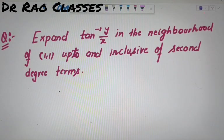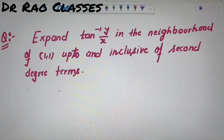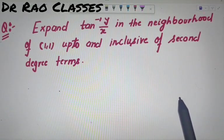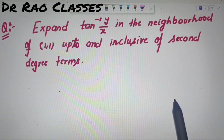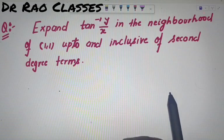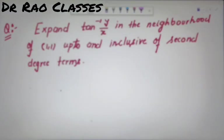In the first video, which will be linked in the description box, I have told you about Taylor series expansion and Maclaurin's expansion — around the origin as Maclaurin's expansion, and about non-zero points as Taylor series expansion. I have discussed each and every aspect in the previous lecture with examples.